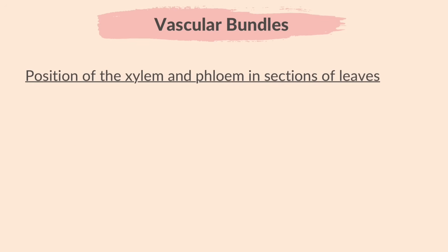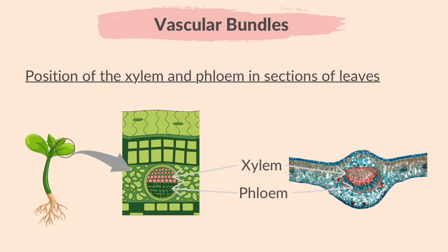Now let's learn where the xylem and phloem tissues are located in the cross-section of a leaf. In the diagram, the upper pink area is the xylem and the lower green area is the phloem. On the right is a real image of the cross-section of a leaf.